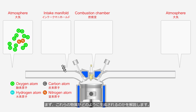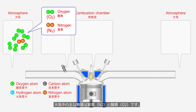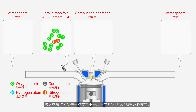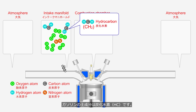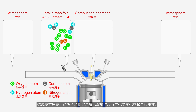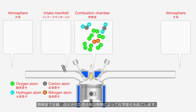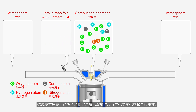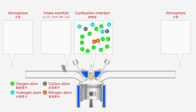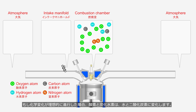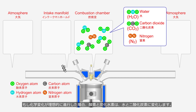First, we will learn how these substances are generated. The main components of the atmosphere are nitrogen and oxygen. Gasoline is injected into the intake air at the intake manifold. The main component of gasoline is hydrocarbons. The air-fuel mixture compressed and ignited in the combustion chamber undergoes a chemical change through combustion. If the chemical reaction proceeds ideally, oxygen and hydrocarbons are converted into water and carbon dioxide.